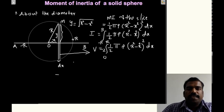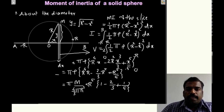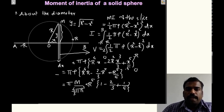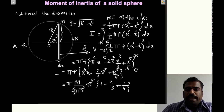Integrate term by term after expanding (R squared minus x squared) squared as R to the 4 minus 2R squared x squared plus x to the 4. Integrating: R to the 4 times x minus 2R squared times x cubed by 3 plus x to the 5 by 5, then apply the limits 0 to R (using symmetry). You get pi rho times (R to the 5 minus 2/3 R to the 5 plus R to the 5 by 5).